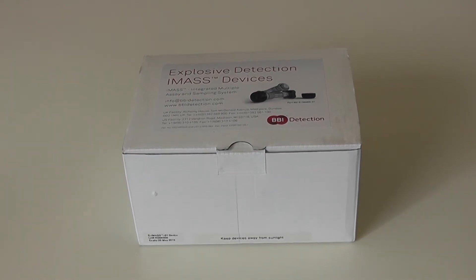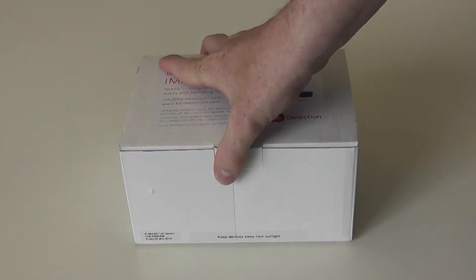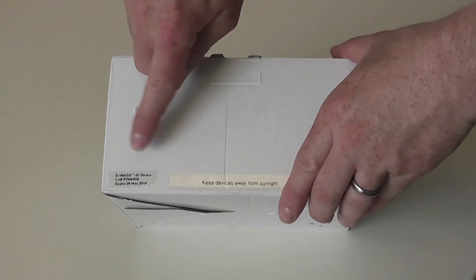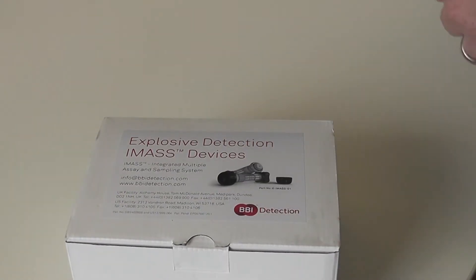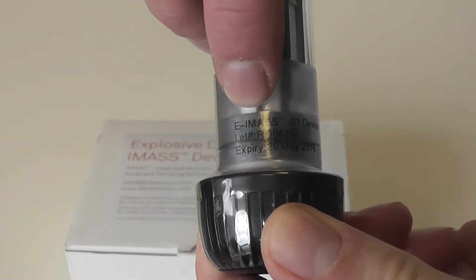Prior to use, the first check to perform is to confirm the product is within expiry date. The expiry date can be found on the product box. It can also be found on each individual device on the label above the cap.